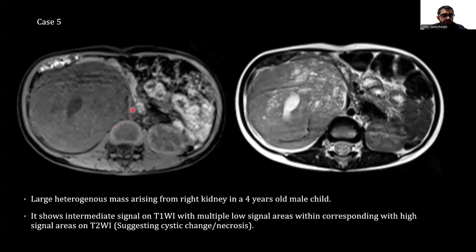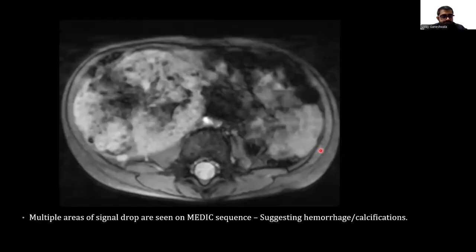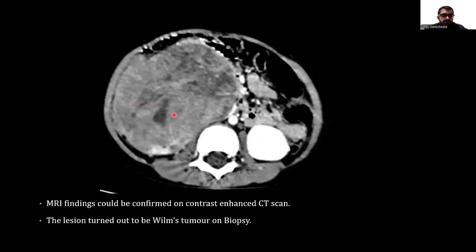In this case, we can see a large heterogeneous mass arising from the right kidney in a four-year-old male child. It shows intermediate signal on T1-weighted images with multiple low signal areas corresponding with high signal areas on T2-weighted images suggesting cystic change or necrosis. The lesion shows areas of diffusion restriction on DWI-ADC images, and multiple areas of signal drop are seen on ME-DIC sequence suggesting hemorrhage or calcification. MRI findings were confirmed on contrast-enhanced CT scan. The lesion turned out to be Wilms tumor on biopsy.